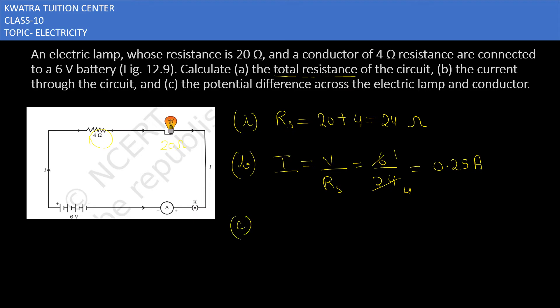What is your potential difference across the electric lamp and conductor? So how much of the electric lamp will be across? It will be V is equal to I. How much of I is here? It is 0.25. And how much resistance is here? It will be 4. So this will be 20. 20 into 0.25 will give you 5 volts. And second.